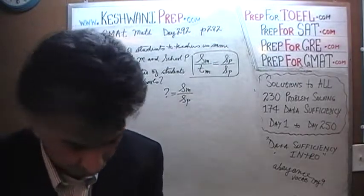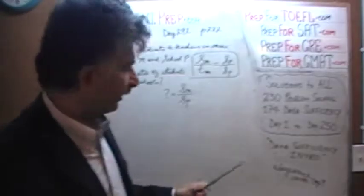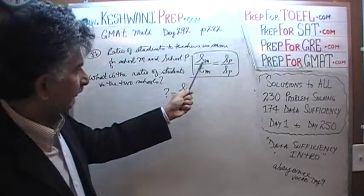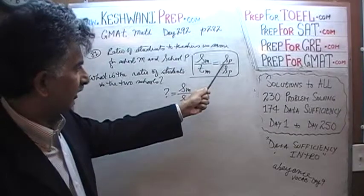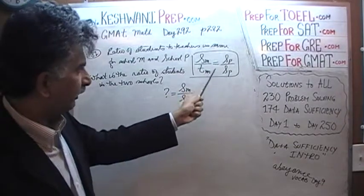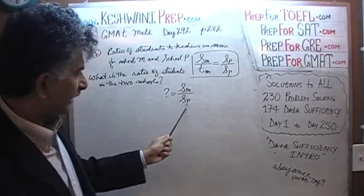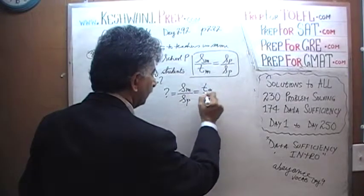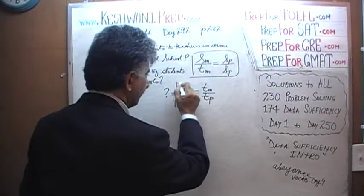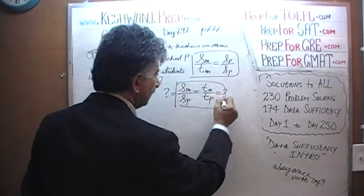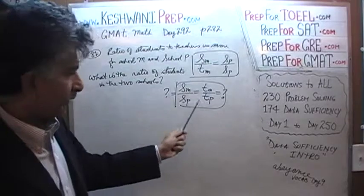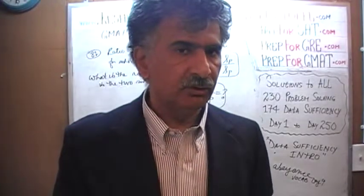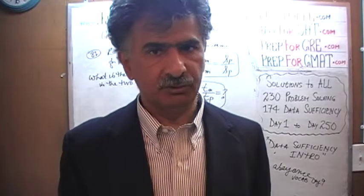Another way to look at the same question: because of this equation, the ratio of students in school M to students in school P is the same as the ratio of teachers in school M to teachers in school P. If we answer one, we can answer the other — it is the same thing. So essentially they are asking for the ratio of students, which is the same as asking for the ratio of teachers in the two schools.